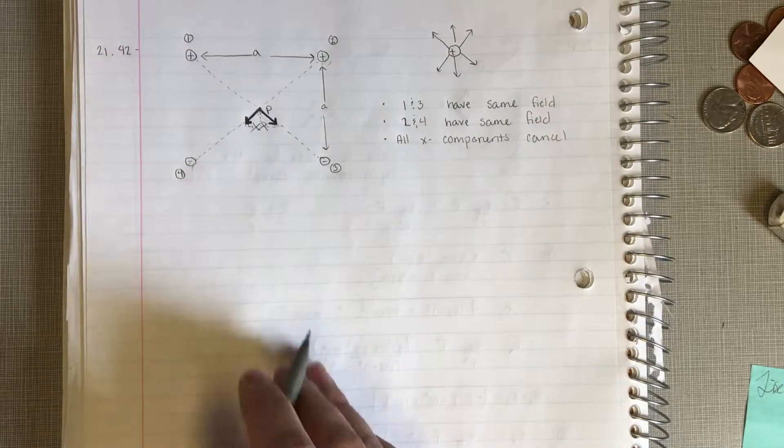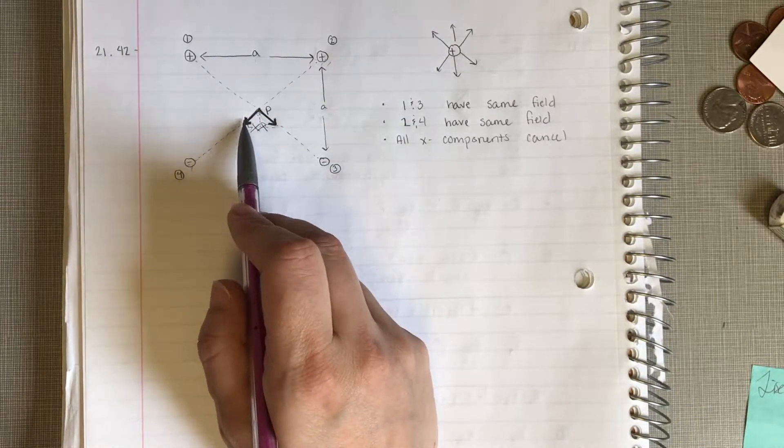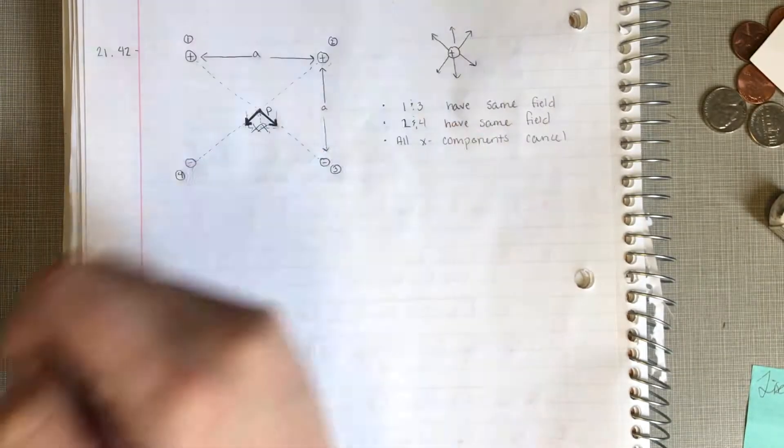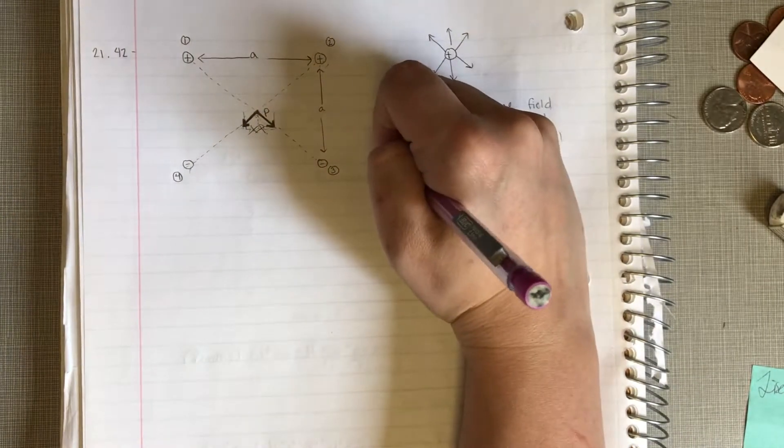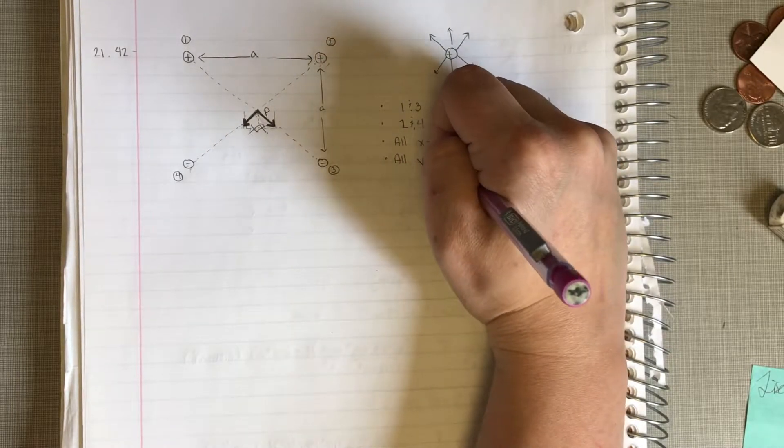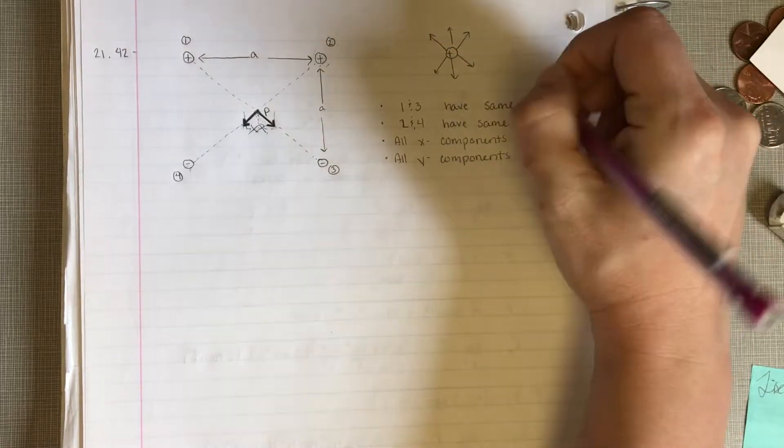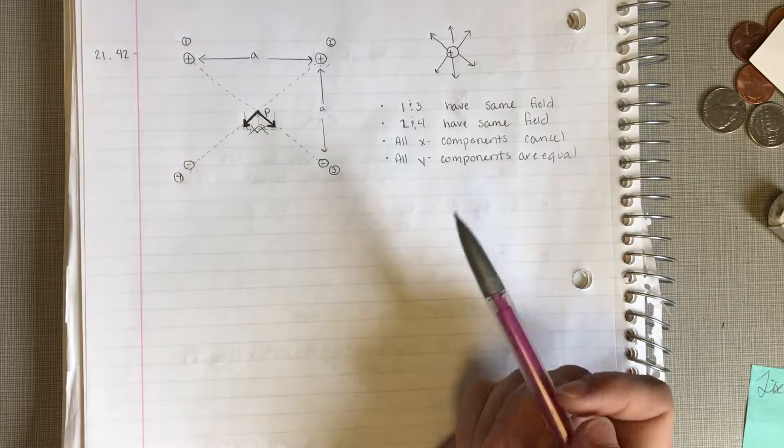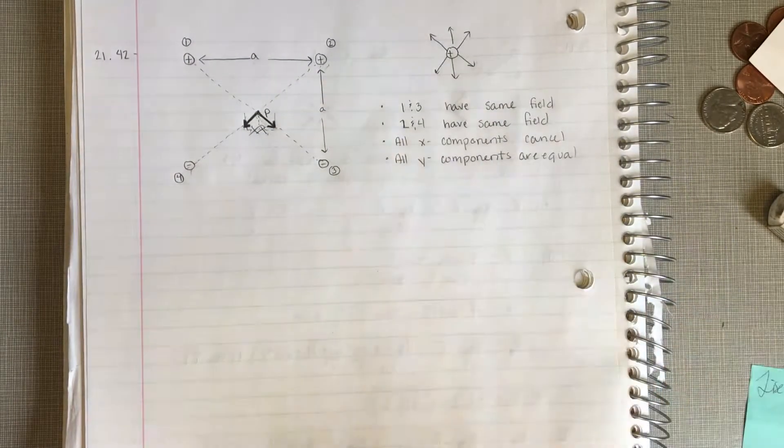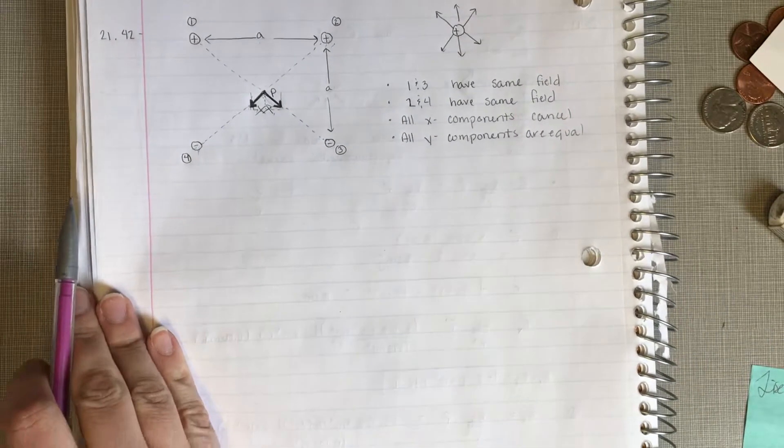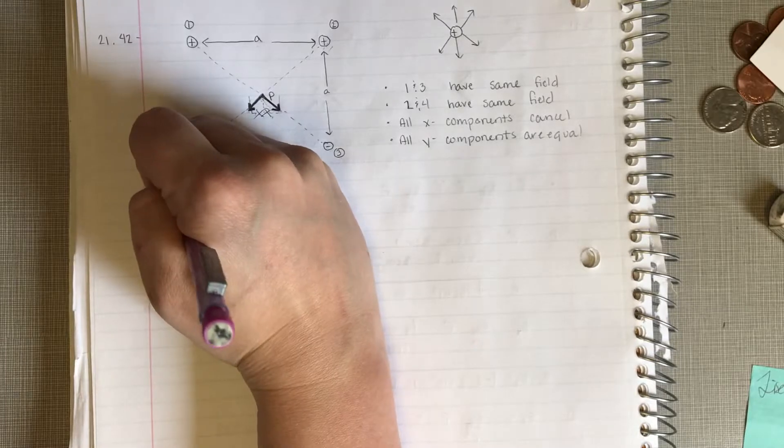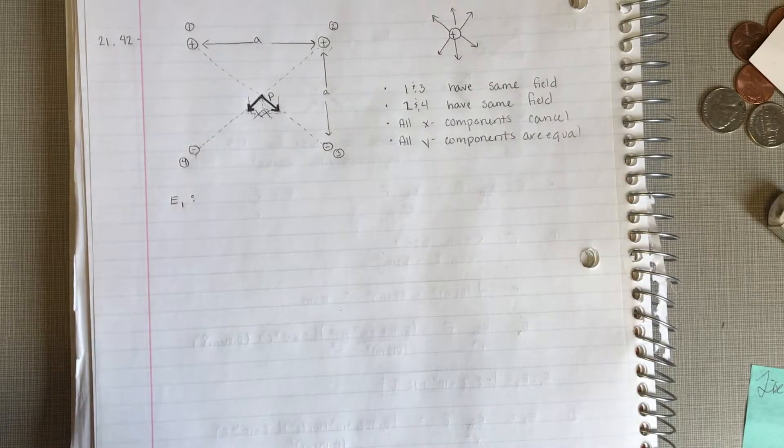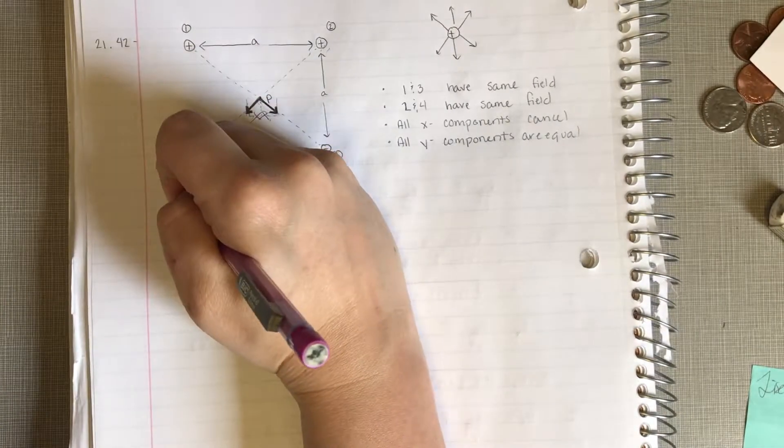Okay. So, 1 and 3 have the exact same field. 2 and 4 have the exact same field. Their x components cancel. But their y components, if we check them out, they're all going to be exactly the same. So, all the y components, because they're the same charge and the same distance again, are equal. So, this is really nice because now we only have to compute it once and just multiply it by 4 and we're done. Look at all of that work we saved. So, let's just look at charge number 1. Because he's up here, he's chilling. He's the most convenient. He's number 1. So, we're going to use him.